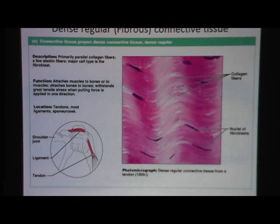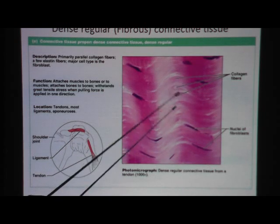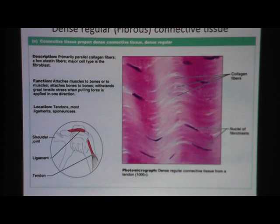Now when something is regular, it's organized. And so the name dense regular is this picture right here. Lots of fibers, lots of stuff, very little white spaces in between of nothing. And it's very organized, so it's dense regular. Where are we in the body? We're in the tendons and ligaments. Tendons and ligaments are very strong because these collagen fibers are very strong.